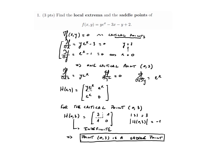The Hessian involves the second partial derivative with respect to x, the second partial derivative with respect to y, and the mixed second derivative. If you compute these, this is what you obtain. We then evaluate the Hessian at the critical point, and to see if this matrix is positive definite or negative definite, we use the upper left determinants.